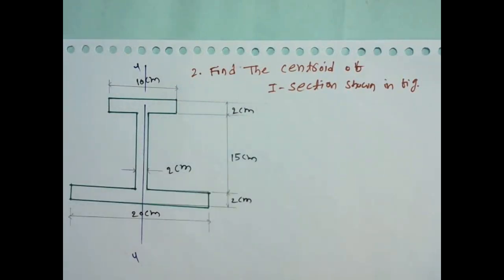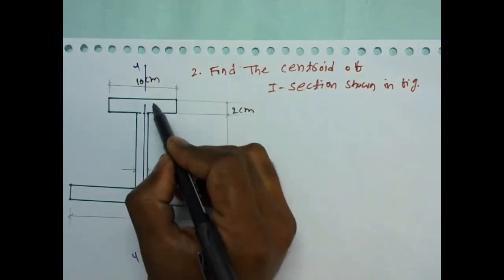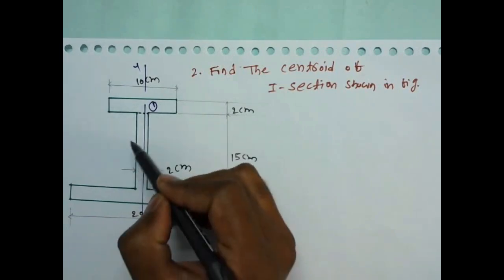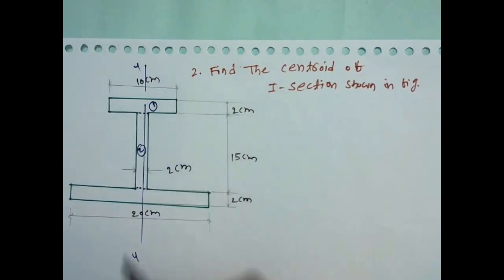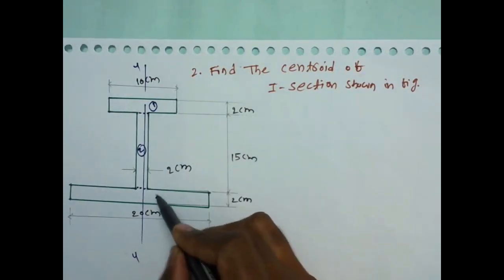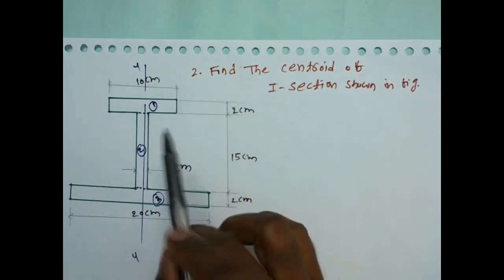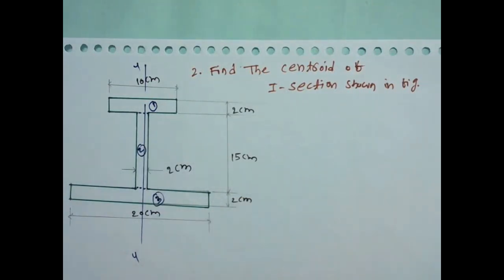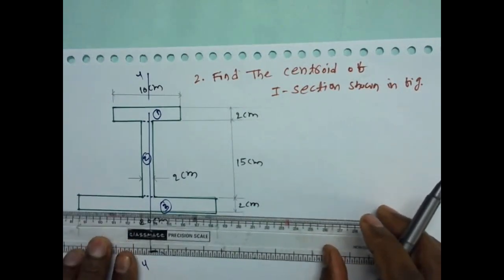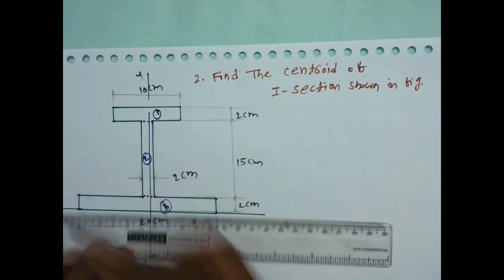Before finding the centroid, we have to divide the section into rectangles. I am drawing dotted lines here. This is the first rectangle, this is the second rectangle, and this is the third rectangle. Always take the bottom line as the reference X-axis.